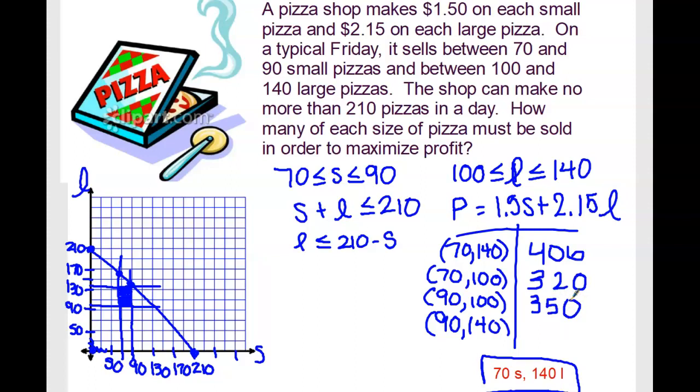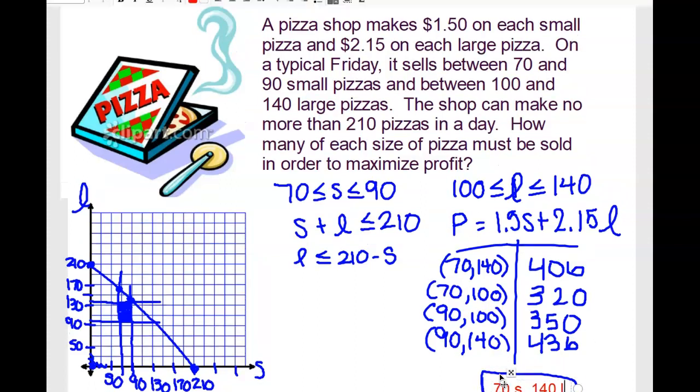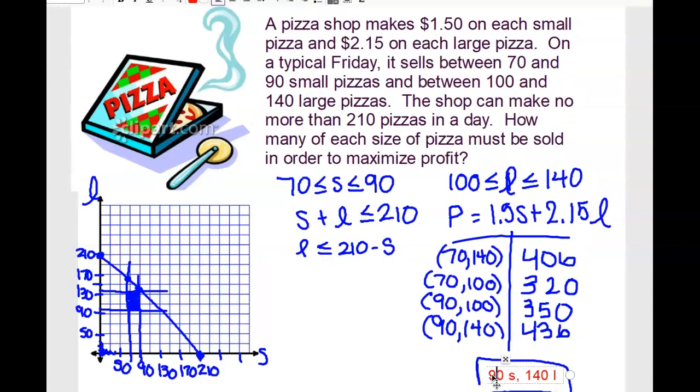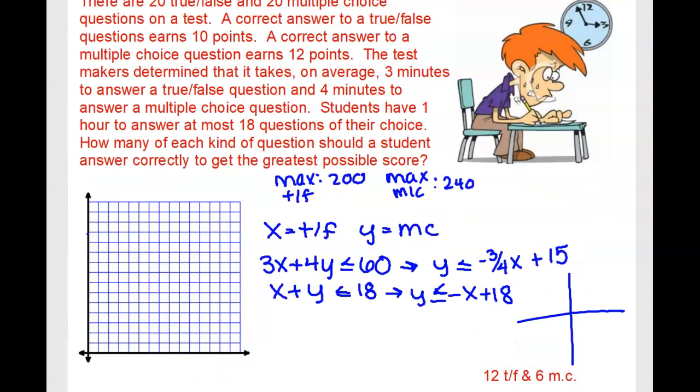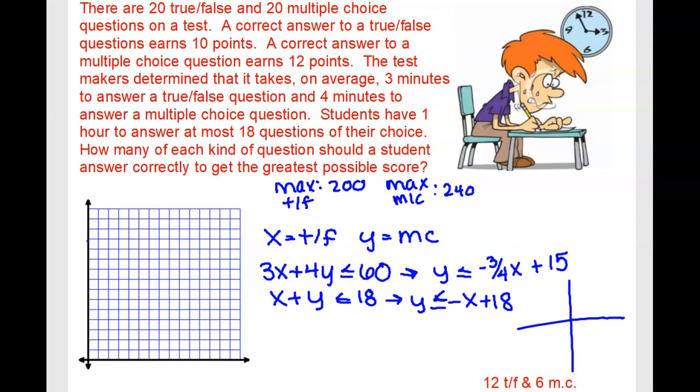And then last but not least, we sell the same number of small and more large, and we get 436. So your answer should be 70 small and 140 large.